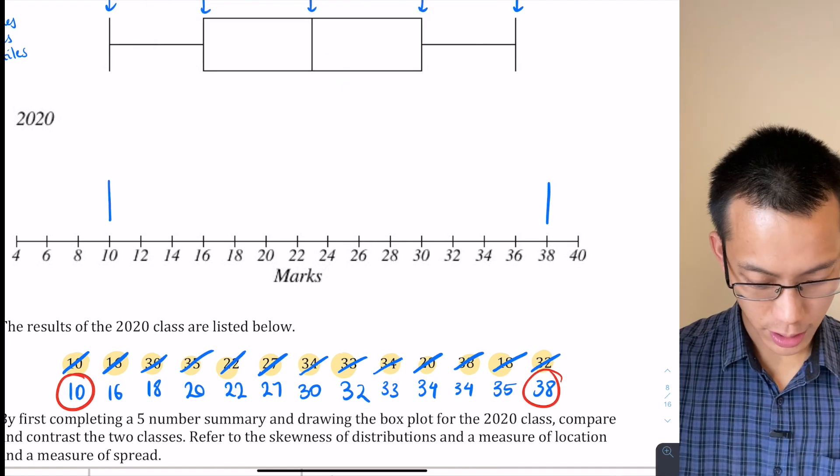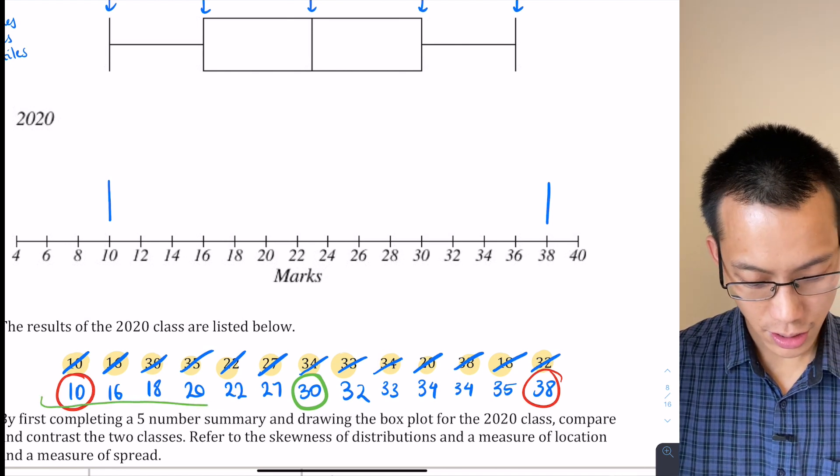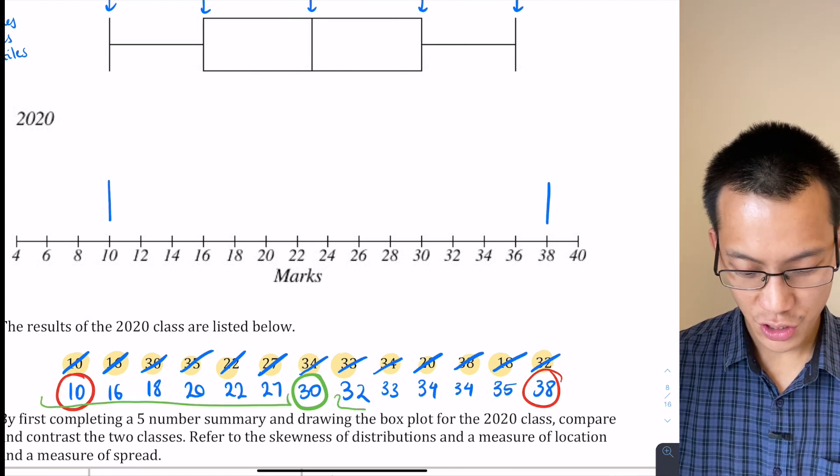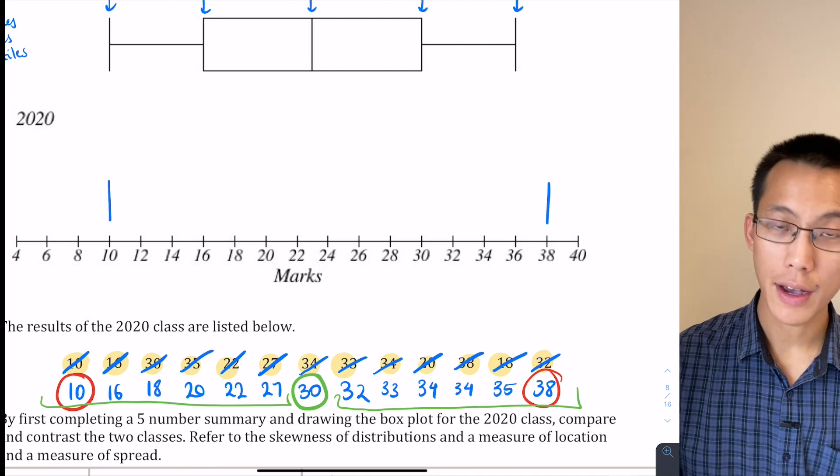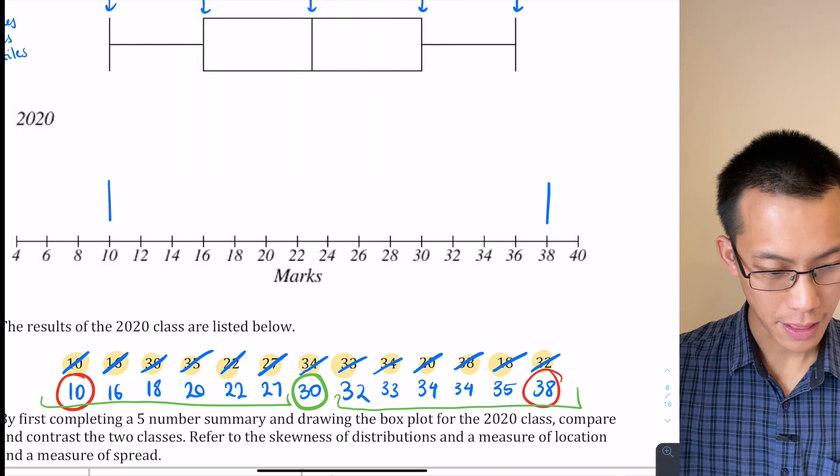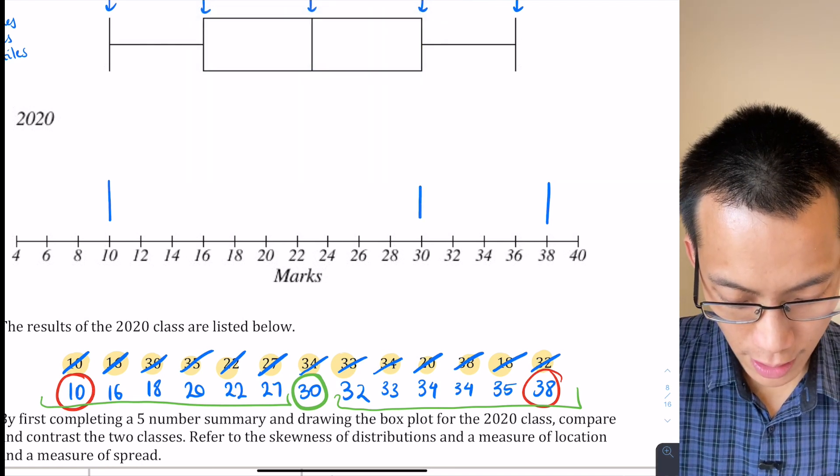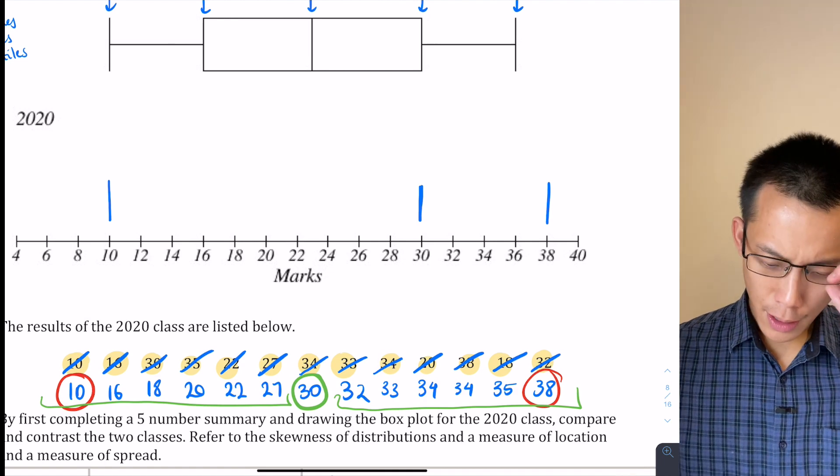So if I've got 13 scores, then the middle score will be the 7th score. Let's find that on the list—the 7th score by the looks of it's going to be 30, and you can see there's going to be 6 scores to the left and 6 scores to the right, so I've divided it into 2 even groups. So I'm going to find 30, that's going to be on my graph here, so there's going to be my median. I might even label that Q2 so I don't forget what it is.